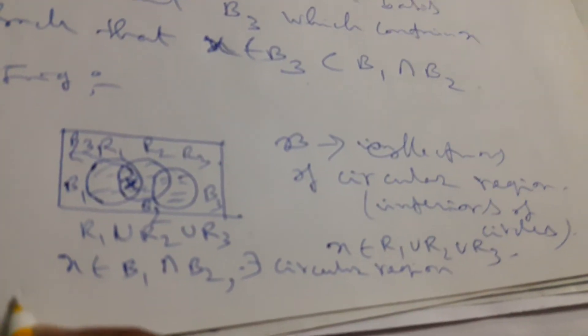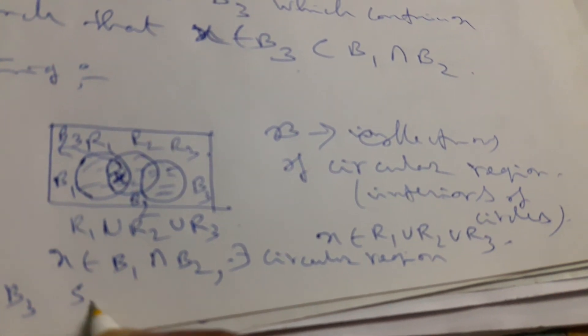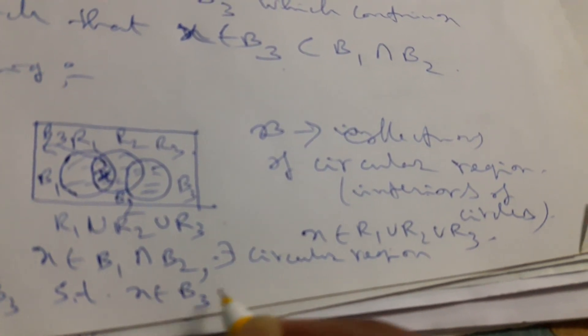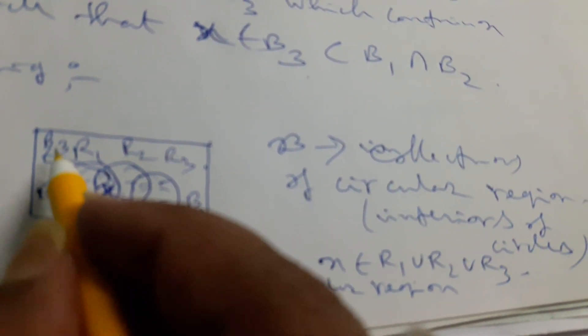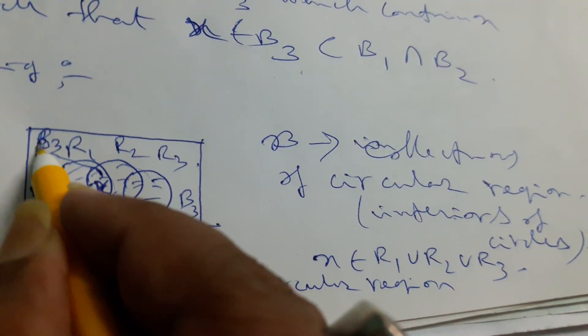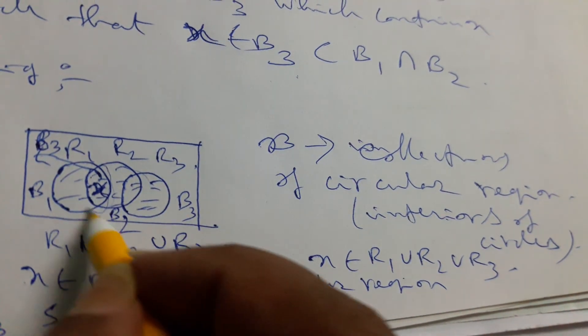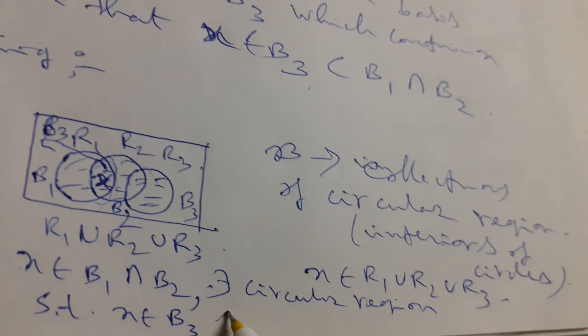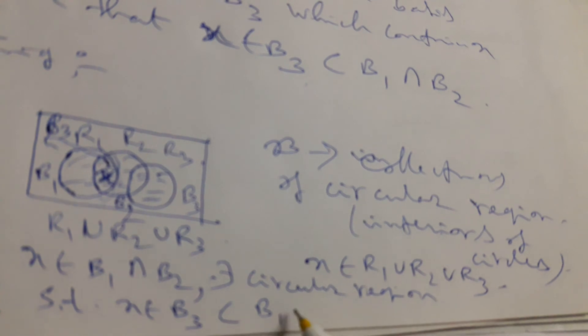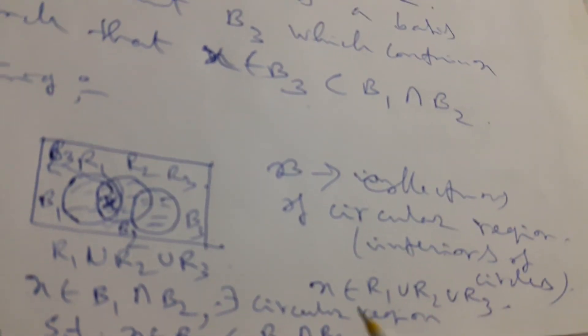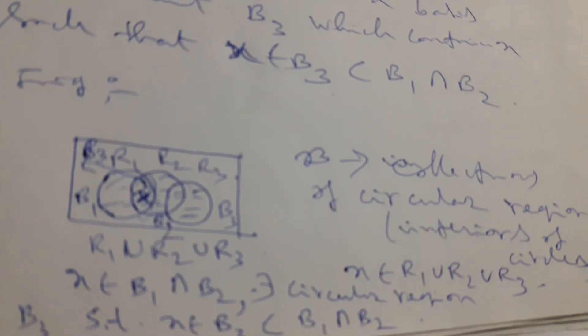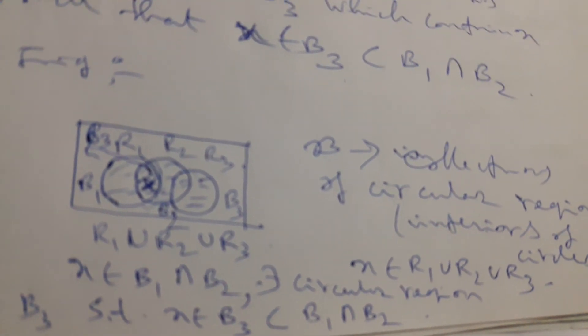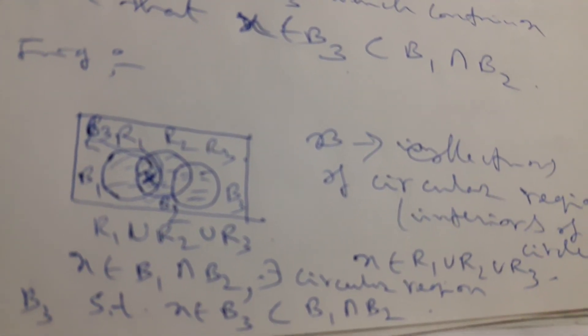That is B3, such that X belongs to B3, and this B3 region is a subset of B1 intersection B2. So in this way we easily get the idea of basis.